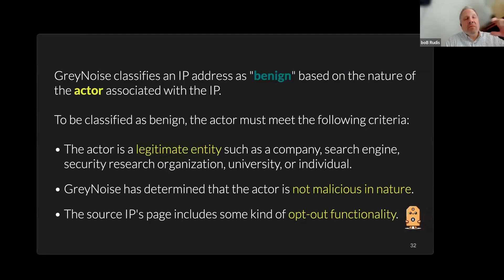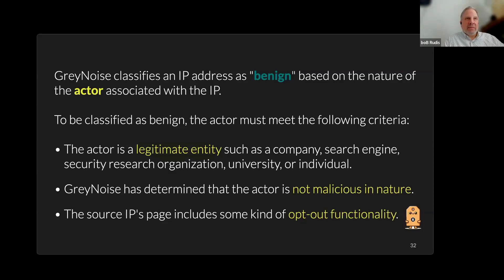To be classified as benign, we have criteria that a researcher, vendor, or actor has to meet. They have to be a legitimate entity — we have to be able to go talk to them. They have to be a company, a researcher, or a known individual. They have to be able to let us reach out to them and interact with us on a regular basis. They have to be squaring up with us.